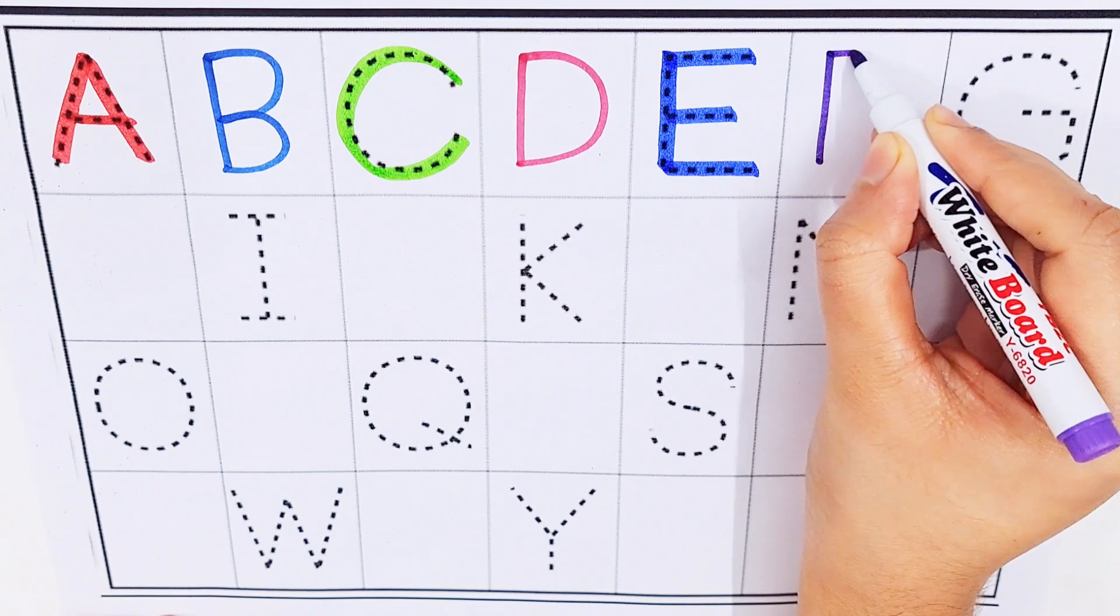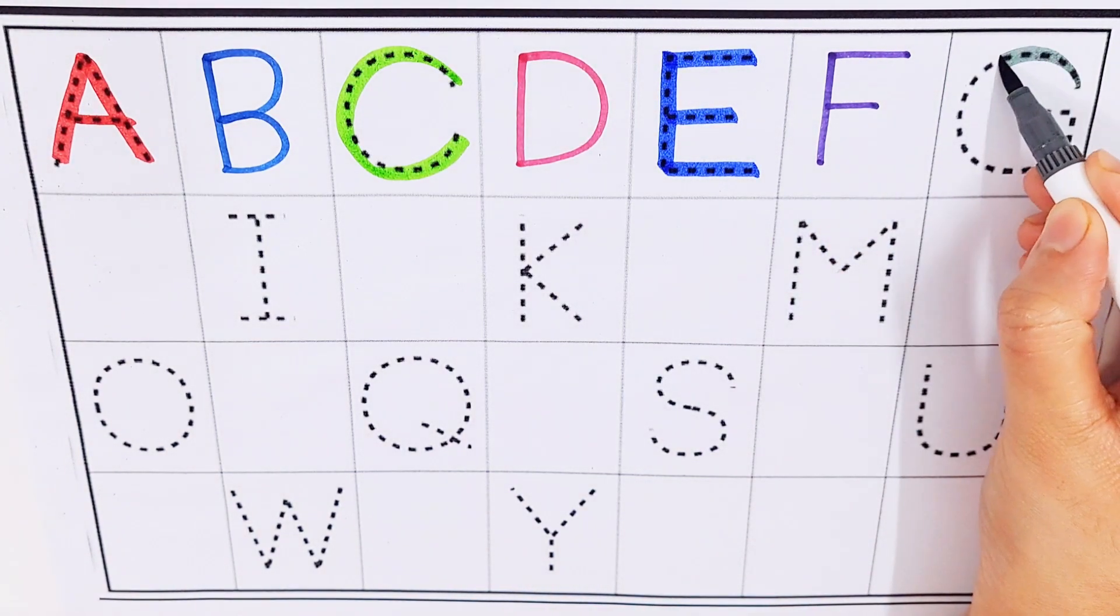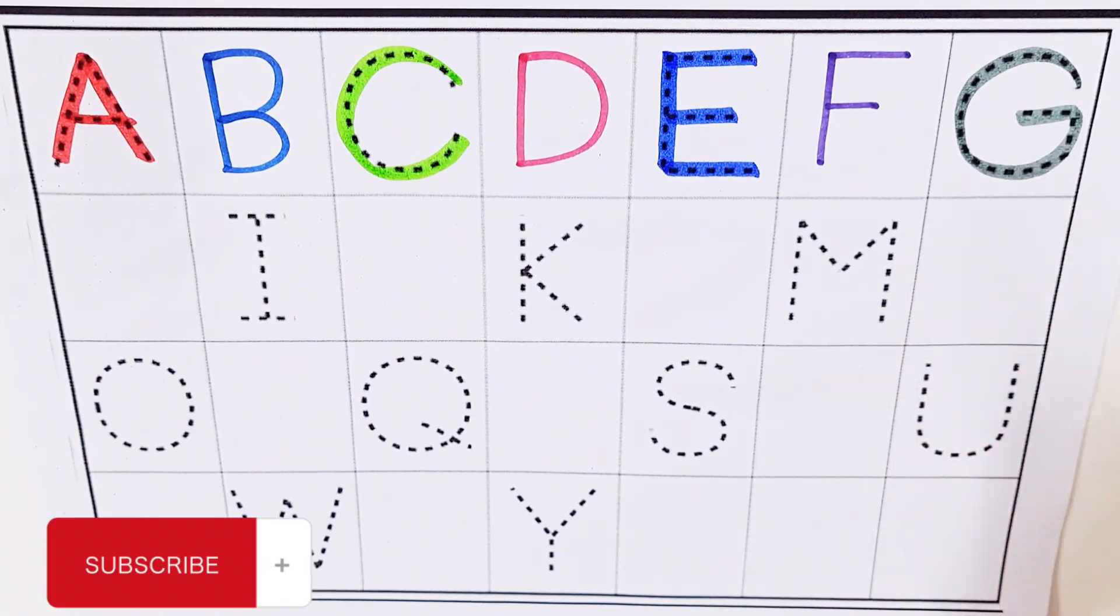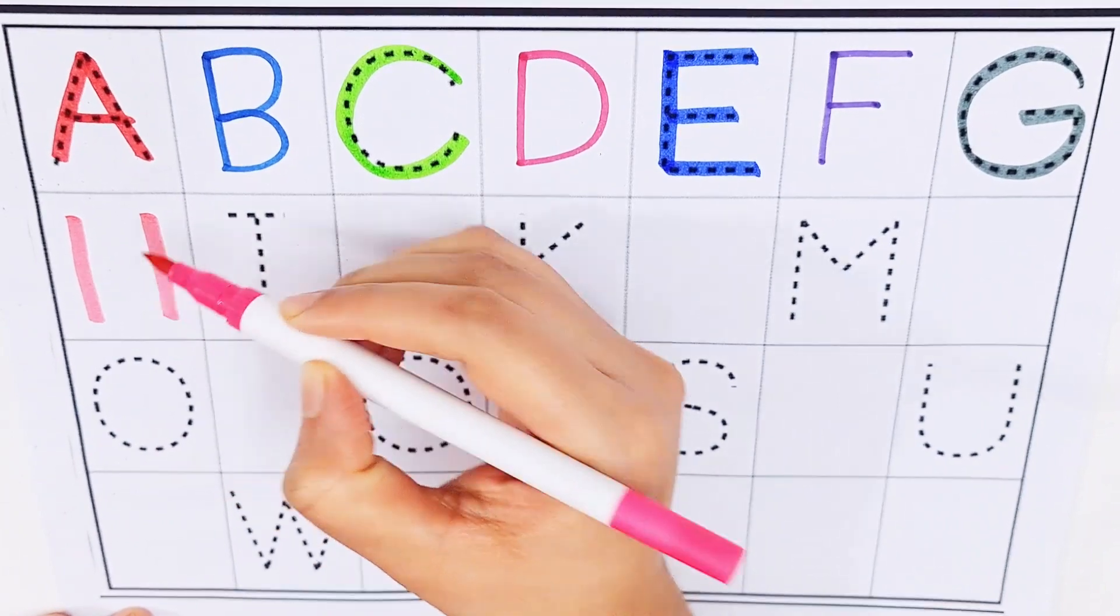F, F for fruits. G, G for grapes. H, H for horse.